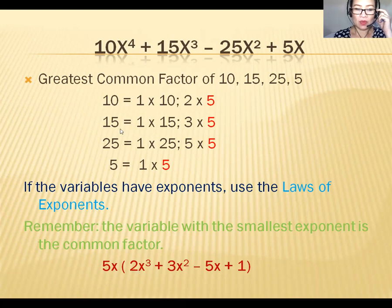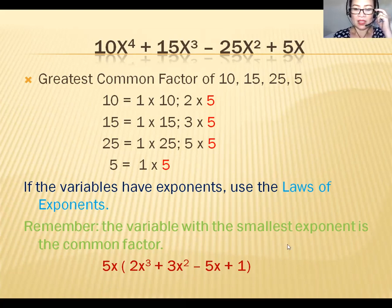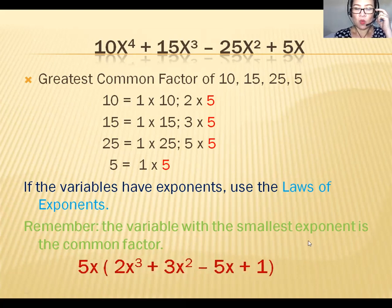Continuing: 15x³ ÷ 5x = 3x², negative 25x² ÷ 5x = −5x, and positive 5x ÷ 5x = 1. So the factored form is 5x(2x³ + 3x² − 5x + 1).